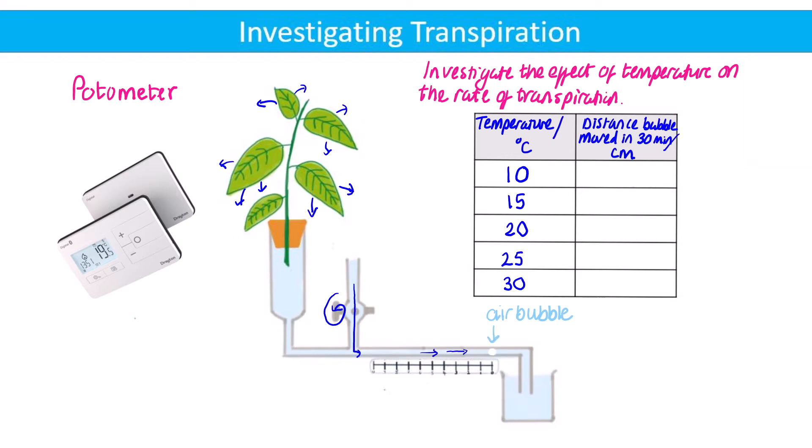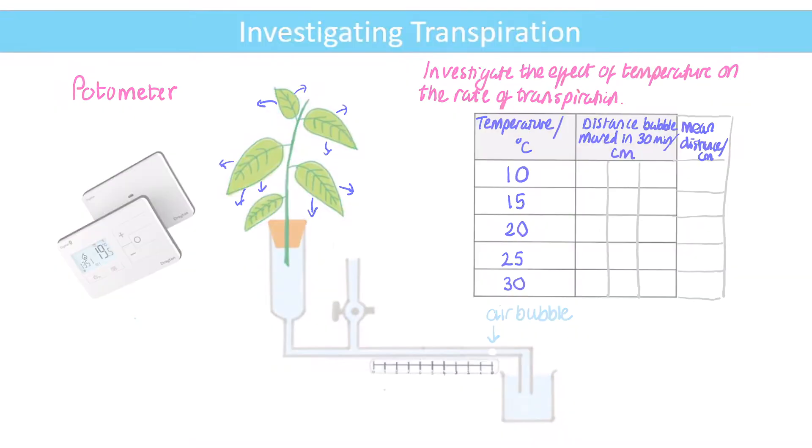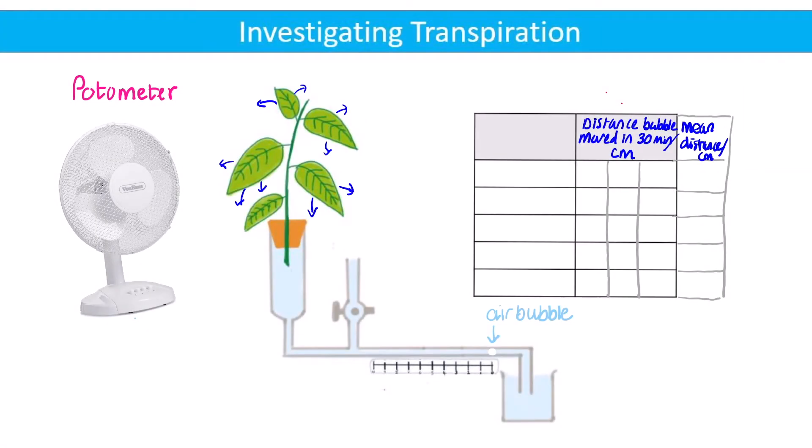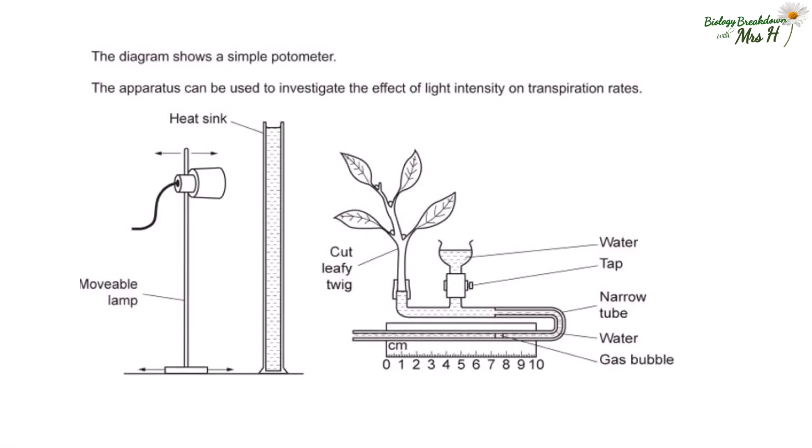We should repeat measuring the distance at each temperature so we have at least three sets of results to make it easier to identify any anomalies. If there were any anomalies, we could discard them when we calculate a mean. Then we could change the independent variable, being sure to control all the other variables, of course, just one independent variable at a time. So let's take wind speed for example. If we're changing the wind speed, then you need to make sure that the temperature is kept the same.